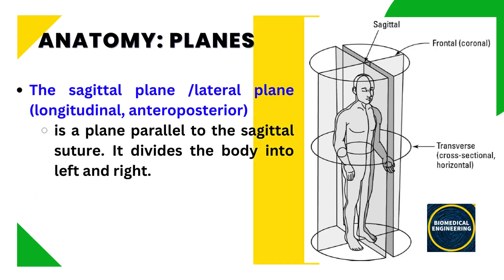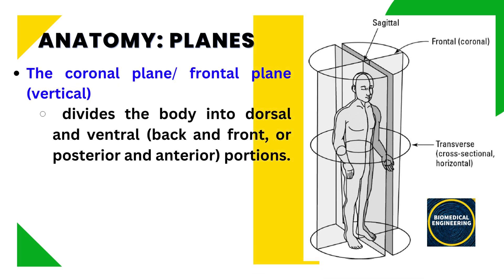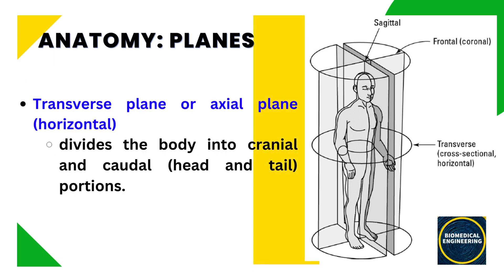Finally, let's talk about anatomy planes. The sagittal plane, also called the lateral plane, runs vertically and divides the body into left and right sections. The coronal plane, also called the frontal plane, runs horizontally and divides the body into front and back sections. The transverse plane, also called the axial plane, runs horizontally and divides the body into top and bottom sections.